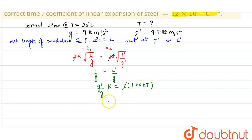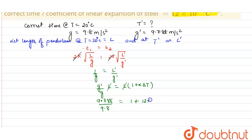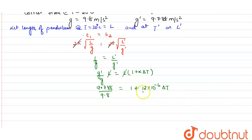Cancelling l from both sides and substituting the values: g' = 9.788 and g = 9.8 meters per second square. So 9.788/9.8 = 1 + α·Δt, where α for steel is 12 × 10⁻⁶. Solving this, we get Δt = −102.04 degrees Celsius.